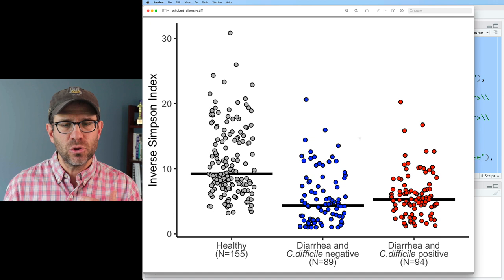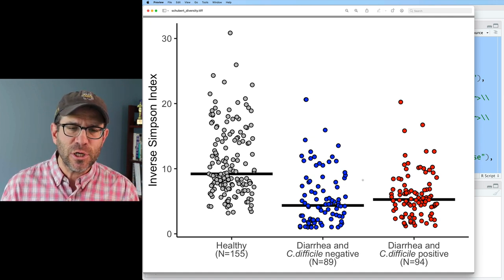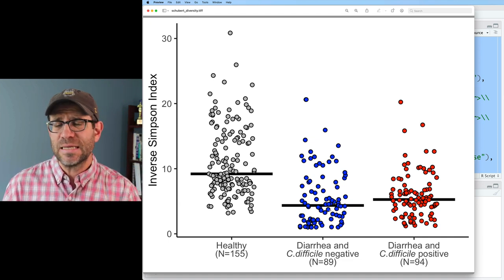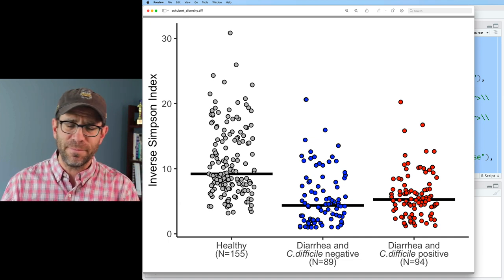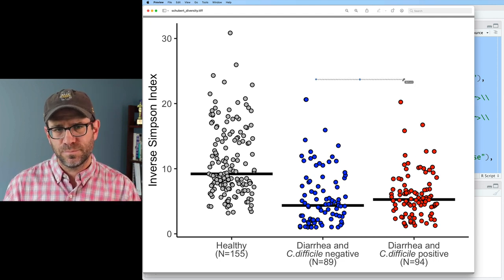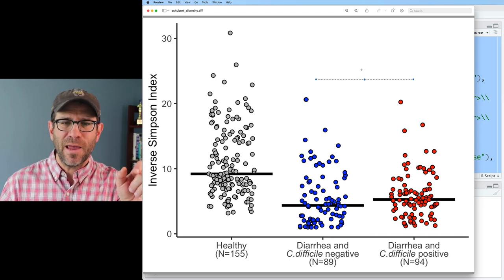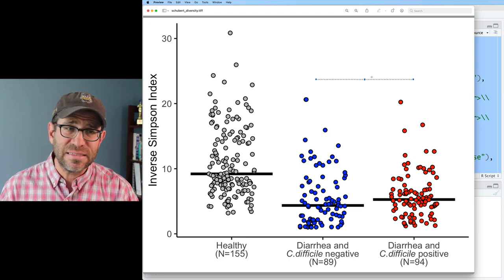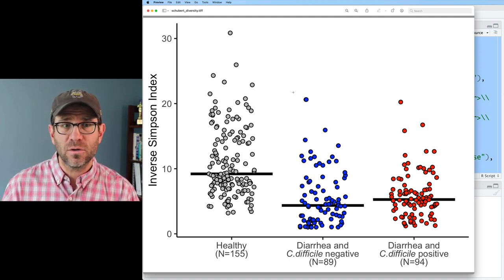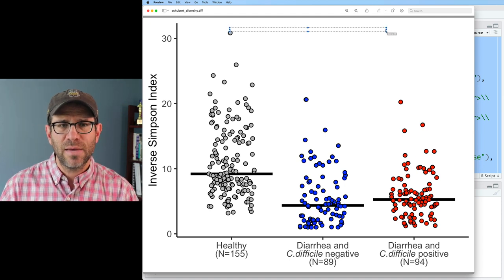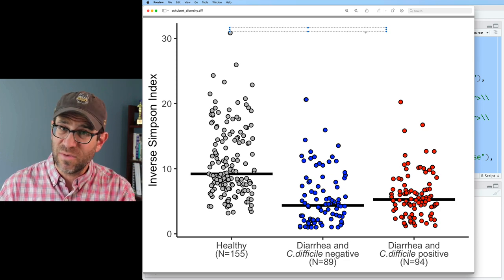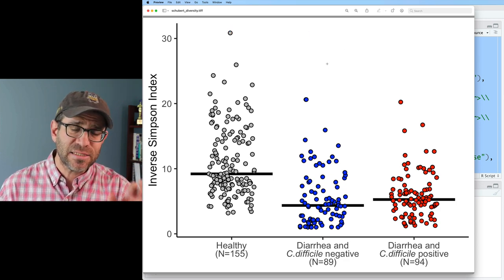As you can see, this jitter plot for the three different disease status groups. We might think that these two groups are probably not significantly different from each other. It is kind of odd that this C. diff positive group has a slightly higher diversity than the C. diff negative diarrhea group, but I doubt it's significant. But what we'd like to have is a bar that goes across here that is black, and then maybe has an NS on the top of it saying not significant. And if the difference between healthy and the diarrheal groups is significant, we'd like to have another bar across the top with a star or perhaps the p-value.